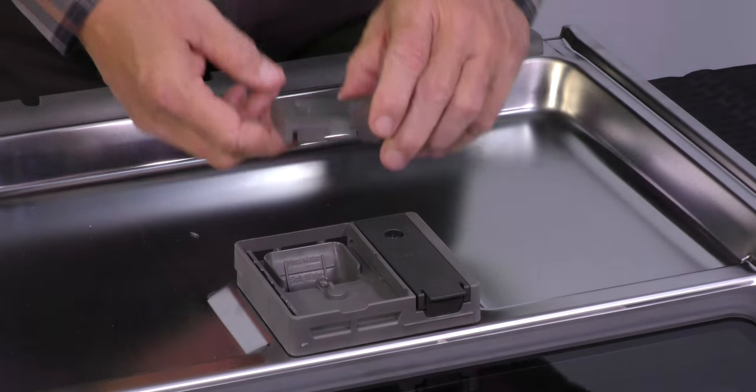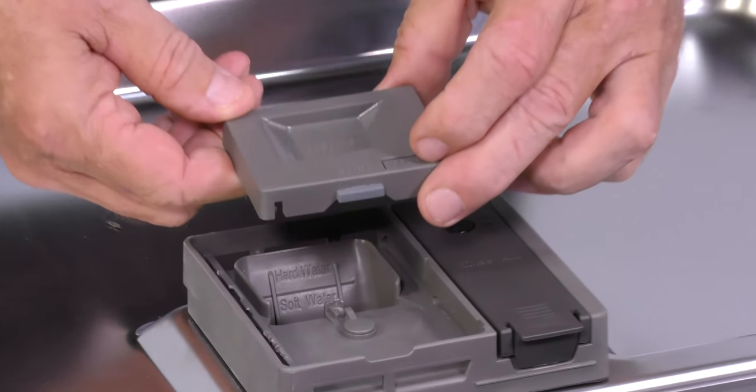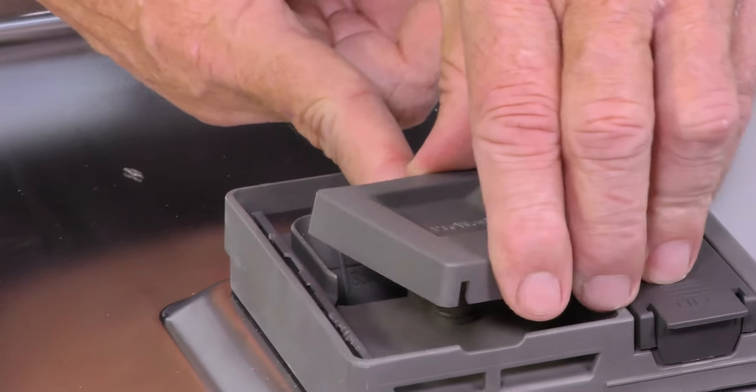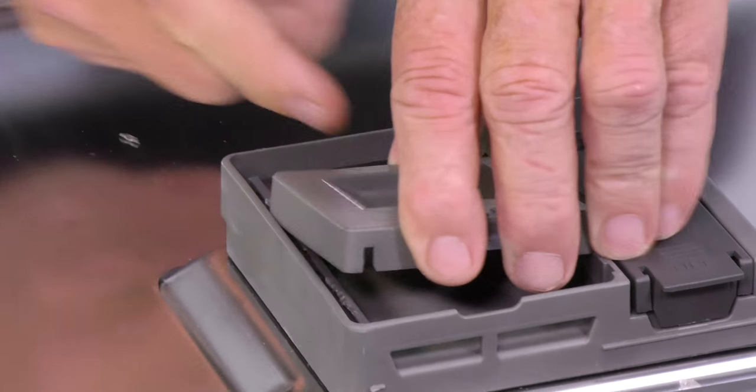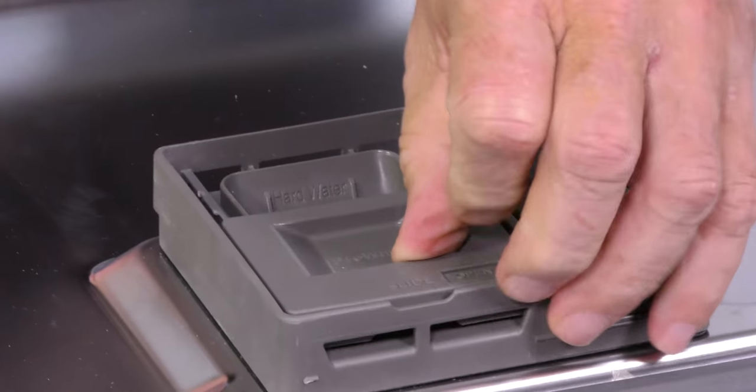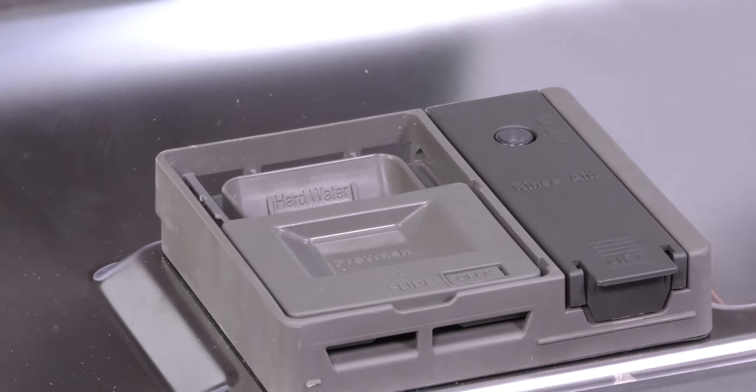When you're reinstalling the new lid dispenser, you want to make sure that the gasket and the open portion of it is facing towards the top of your door. Insert the spring into the alignment hole, snap it back in place, and then make sure you can open and shut it to make sure it's locked in properly.